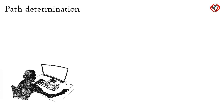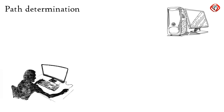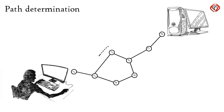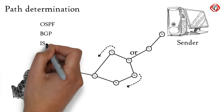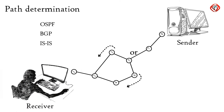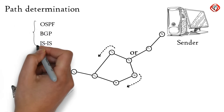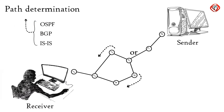Now, path determination. A computer can be connected to an internet server or another computer in a number of ways. Choosing the best possible path for data delivery from source to destination is called path determination. Layer 3 devices use protocols such as Open Shortest Path First (OSPF), Border Gateway Protocol (BGP), and Intermediate System to Intermediate System (IS-IS) to determine the best possible path for data delivery.